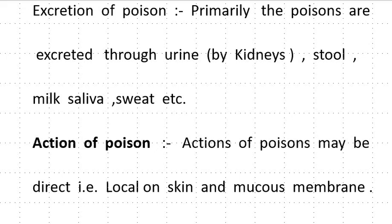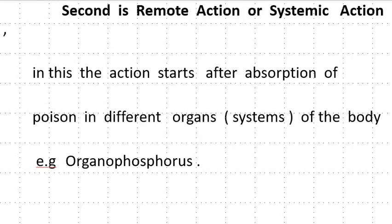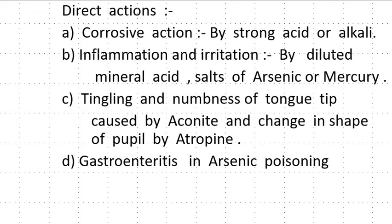Action of poisons. Some poisons may have direct action — that is local action on skin and mucous membrane. Second is remote or systemic action, where the action starts after absorption of poison into different organs of the body, for example organophosphorus poisons. Direct actions include: corrosive action by strong acids and alkali; inflammation and irritation by diluted mineral acid, salts of arsenic or mercury; tingling and numbness of the tongue caused by Aconite; change in size of the pupil by atropine; and gastroenteritis in arsenic poisoning.